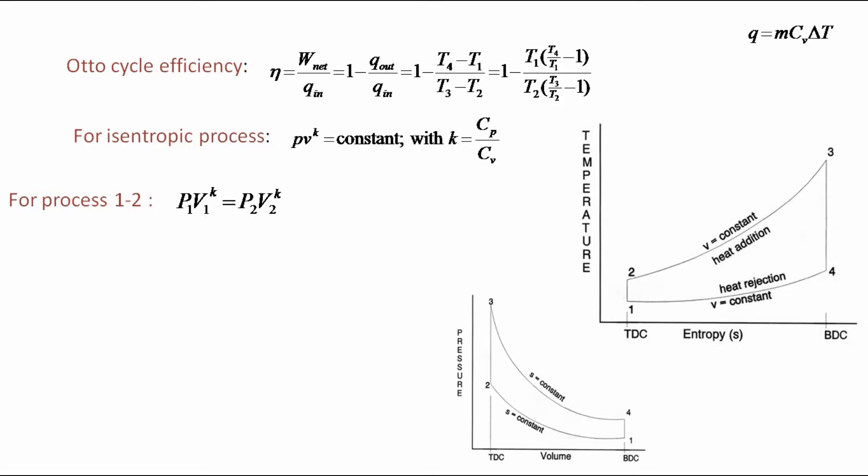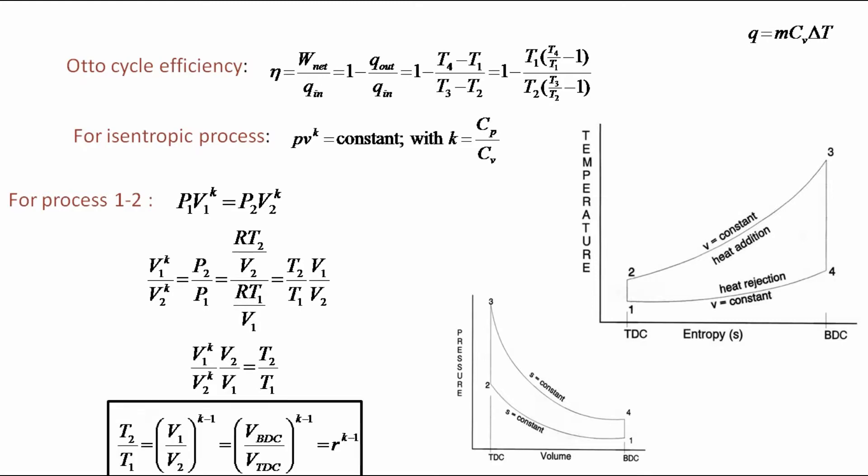For process 1 to 2 we know P1V1^k is equal to P2V2^k which can also be manipulated as (V1/V2)^k is equal to P2 by P1. From ideal gas formula, T2/T1 is equal to (V1/V2)^(k minus 1) that is equal to volume at BDC by volume at TDC whole power k minus 1. That is equal to compression ratio r whole power k minus 1.